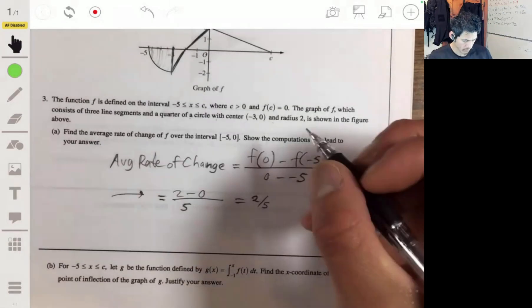Average rate of change - don't overthink this first part because it's as simple as calculating slope. Change in y over change in x, we're going from negative 5 to 0. So f of 0 minus f of negative 5 over 0 minus negative 5. We get 2 minus 0 over 5, so the answer is 2 fifths.